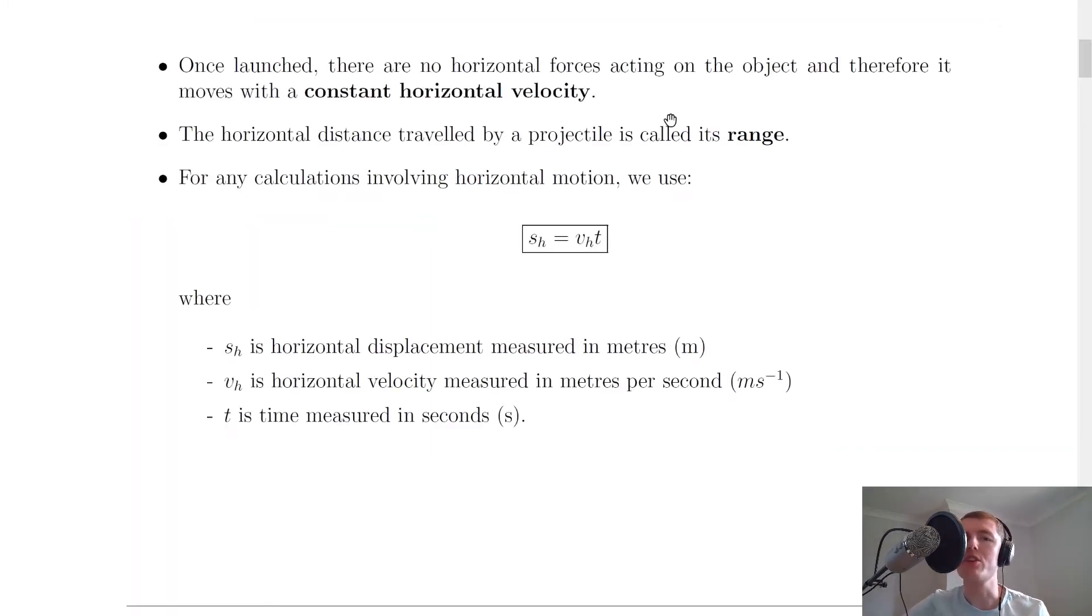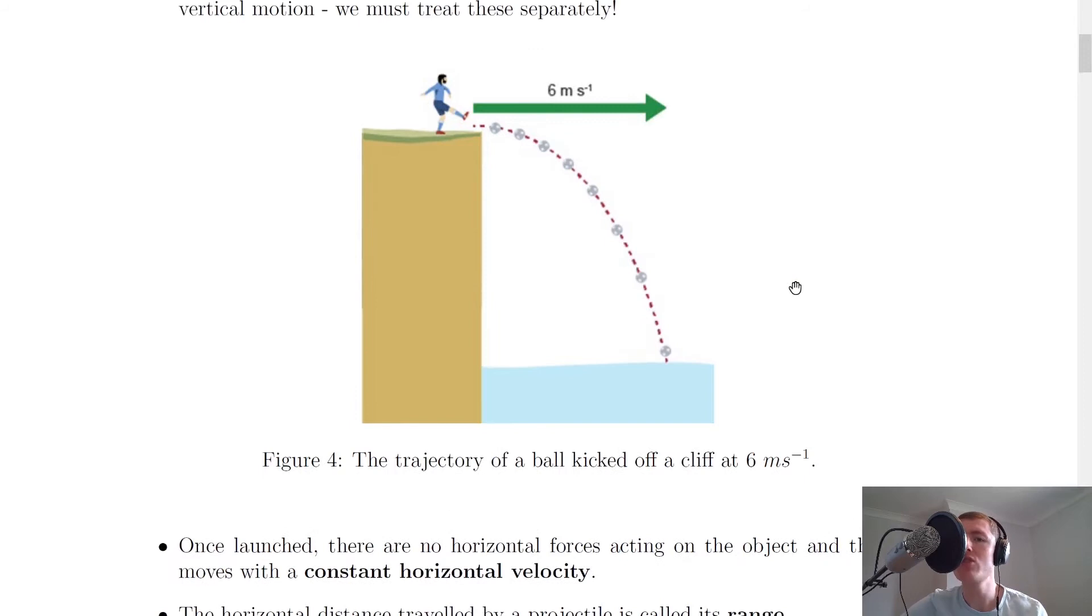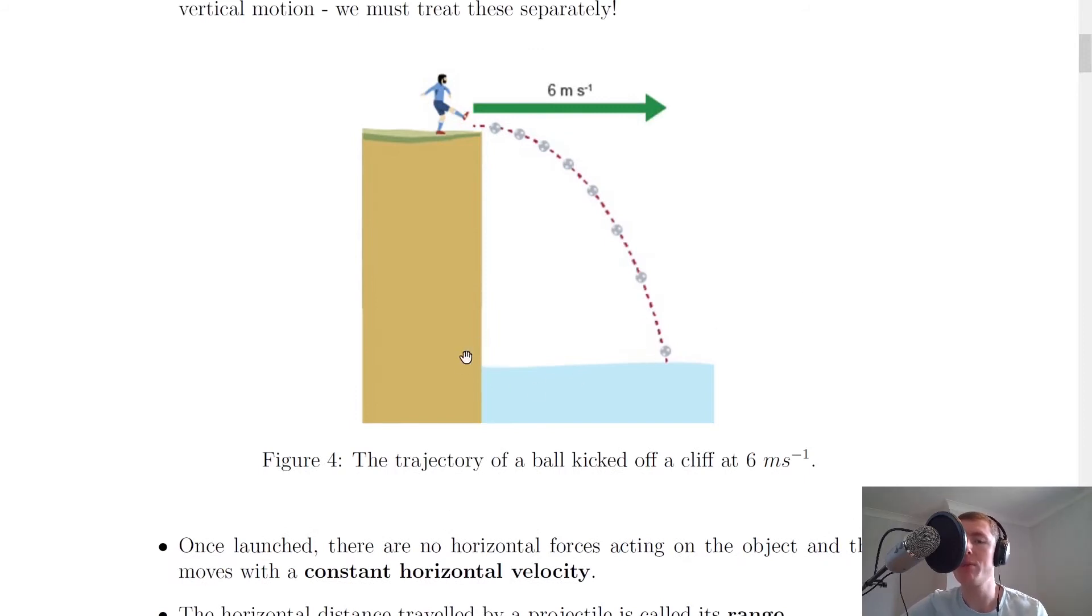Once launched, there are no horizontal forces acting on the object, and therefore it moves with a constant horizontal velocity. This just means that the horizontal velocity will have the same value at all times. It never changes throughout the motion because there's no unbalanced forces acting on it horizontally. The horizontal distance travelled by a projectile is called its range. If we go back to this picture, the range would be from the point at which the ball is kicked, from over here, all the way along until where the ball reaches the water. From about here all the way along to here, and that horizontal distance would be called its range.